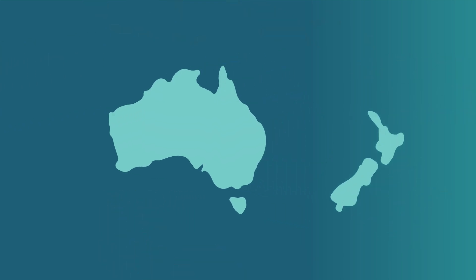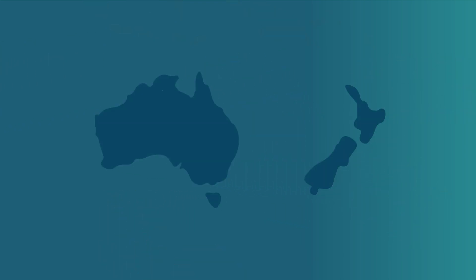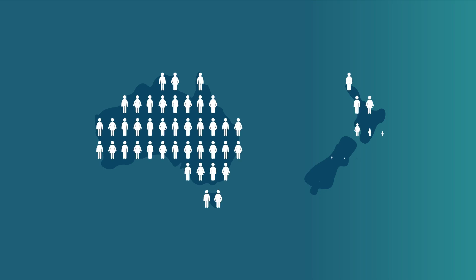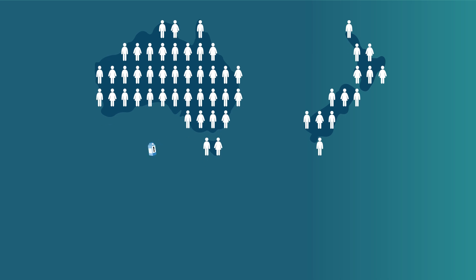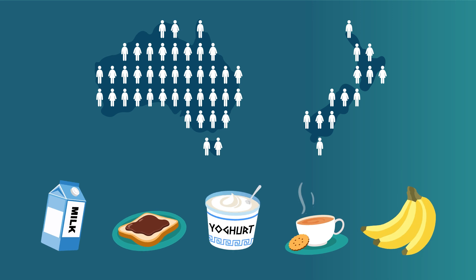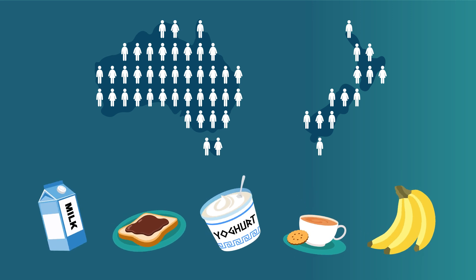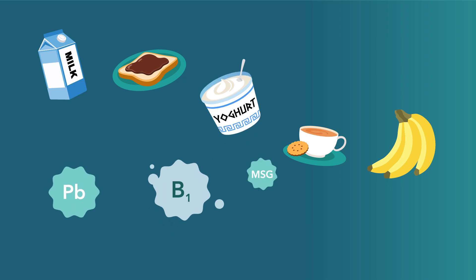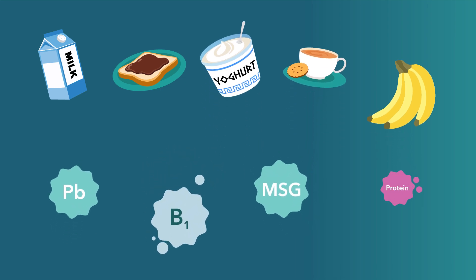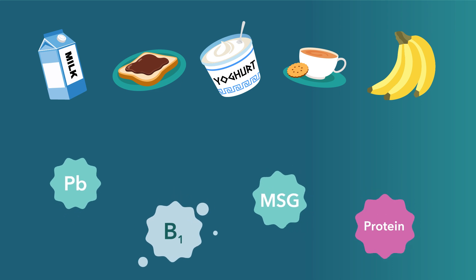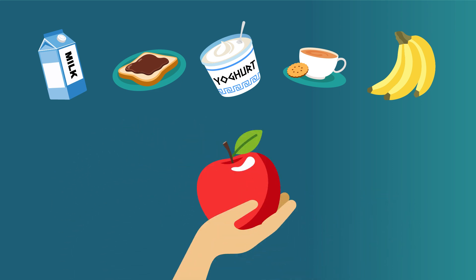Food consumption data are collected through national nutrition surveys in Australia and New Zealand, gathering details from thousands of people. These nutrition surveys represent daily food consumption across the population, which is valuable for dietary exposure assessment. Using all of this information and internationally accepted techniques, our team of scientists can model or estimate the exposure to, or intake of, a range of different chemicals in food.